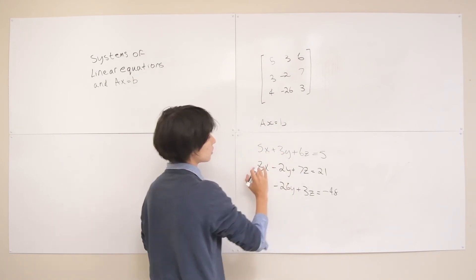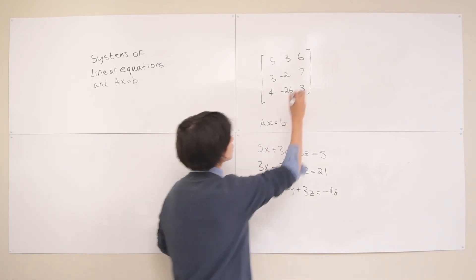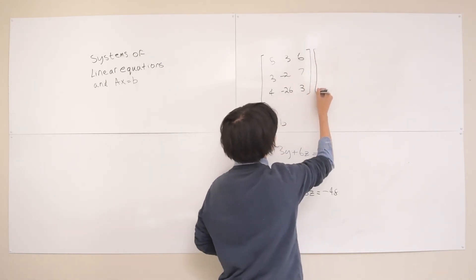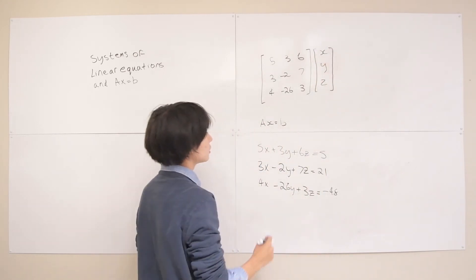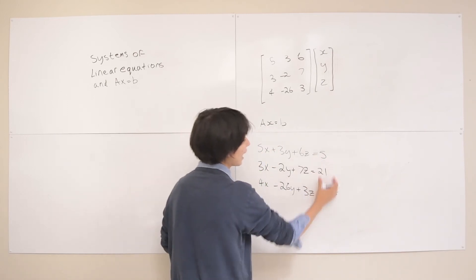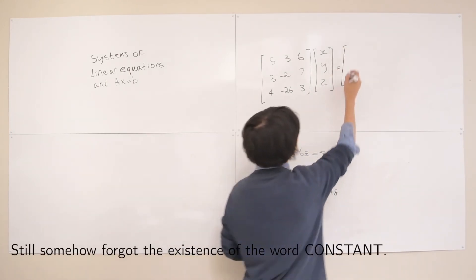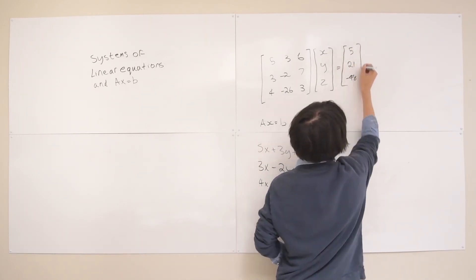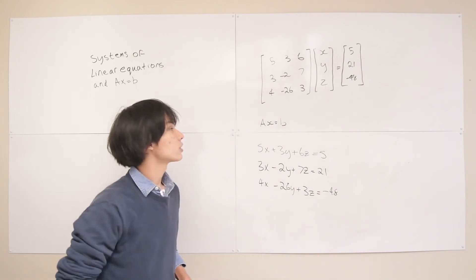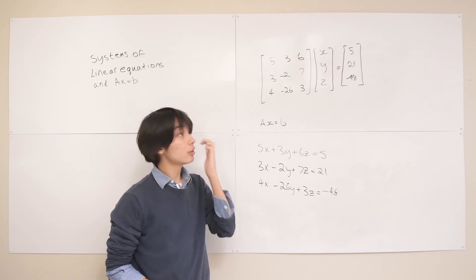Now let's make an x vector and this x vector is simply just going to be the variables we have, so x, y and z. And then finally let's make this b which is going to be the answers that we have on the right hand side, these numbers: 5, 21, negative 48.